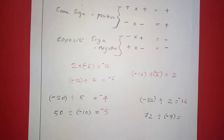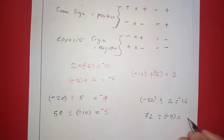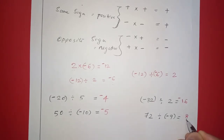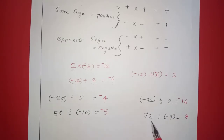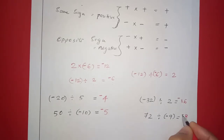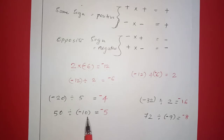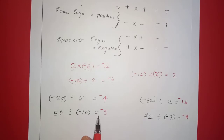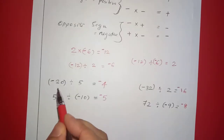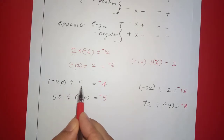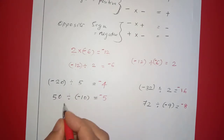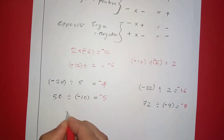72 and 9: 9 divided into 72 is 8. One is positive and one is negative, so the answer is negative. In this case, there are two integers with opposite signs. If we divide whole numbers, the opposite sign is negative. For example, negative 20 divided by 5 equals negative 4.